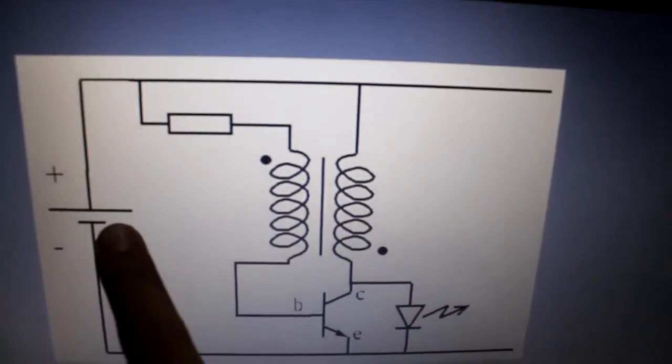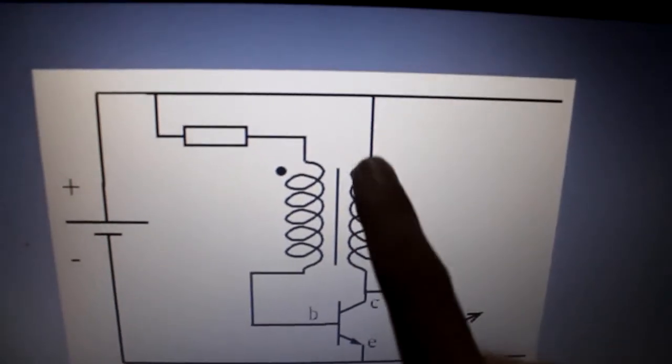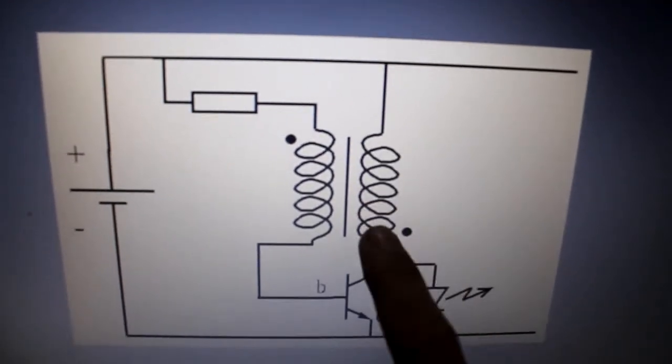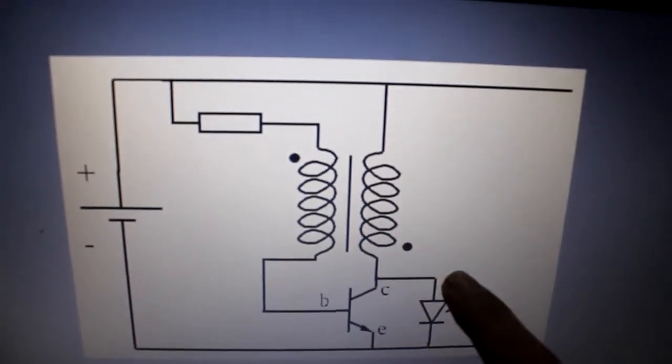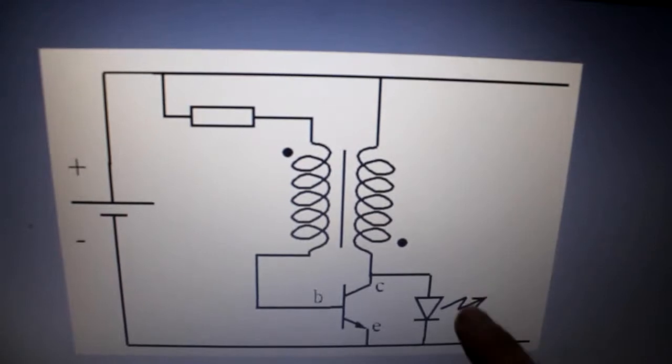So for example you have here 12 volts then the voltage here will become 20 to 24 volts and it could charge another 12 volt battery over here.